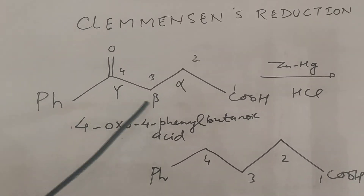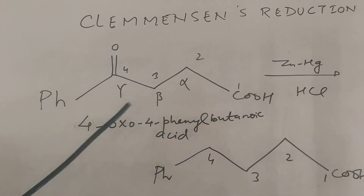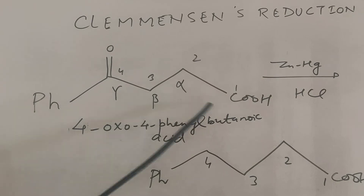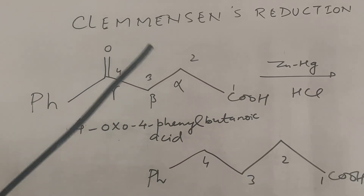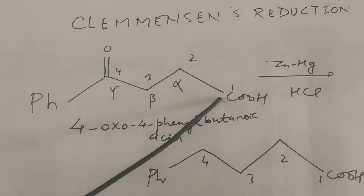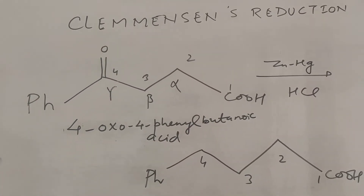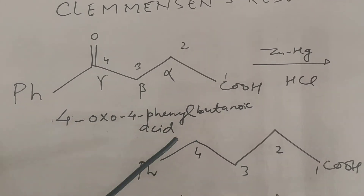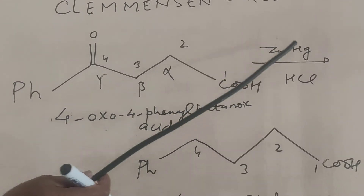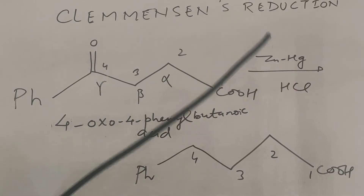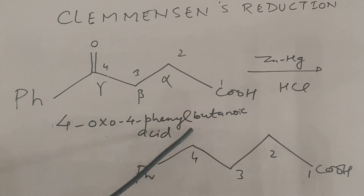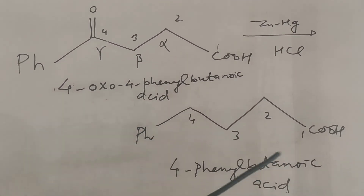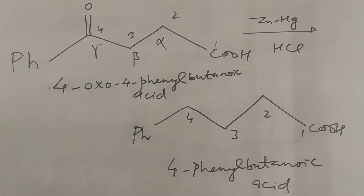Now let's see one example with gamma-keto carboxylic acids. For 4-oxo-4-phenylbutanoic acid undergoing Clemmensen reduction, the 4-oxo group is reduced and it forms 4-phenylbutanoic acid.